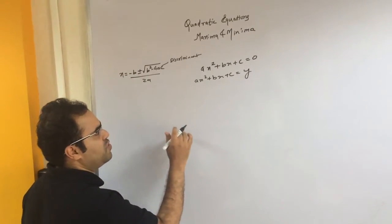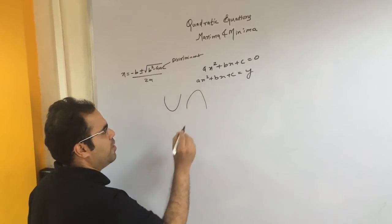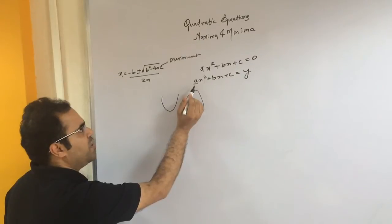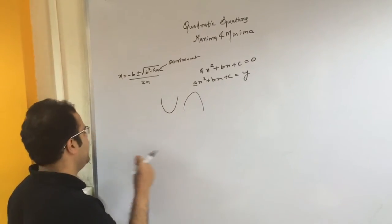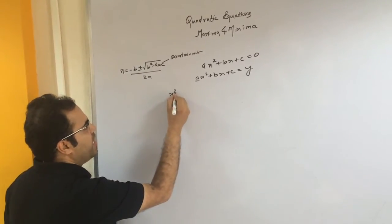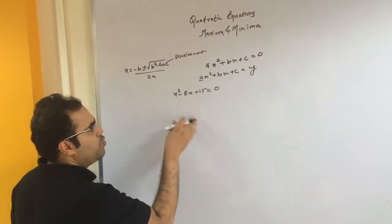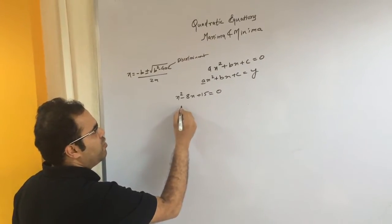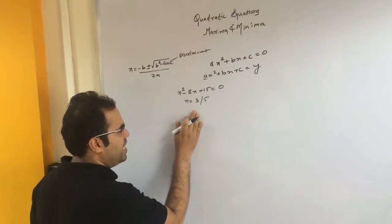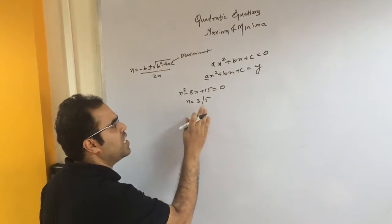There are two different types of graphs we are going to understand here. One will be a U-shaped graph which opens upward, and another will be an inverted U-shaped graph. That actually depends on the value of a — whether it is positive or negative — and to an extent the discriminant will play a role as well. Let's consider a basic case: x² − 8x + 15 = 0. When you calculate the roots you will get x = 3 and x = 5.